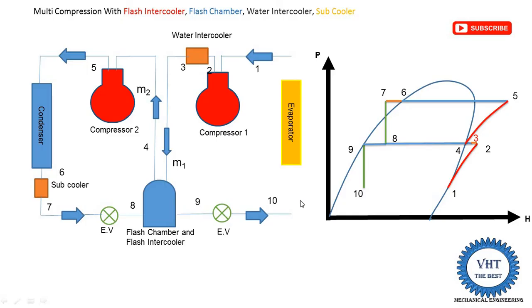The refrigerant is supplied into the evaporator to absorb heat from the space. In a freezer, for example, the refrigerant absorbs heat from vegetables, fruits, and water for making ice. The refrigerant temperature increases or its phase changes from liquid to vapor region. The process 10 to 1 takes place and the mass of refrigerant is M1. At point 10 it starts absorbing heat and is fully converted to vapor at the outlet of the evaporator. Next we do the energy balance of the flash chamber and flash intercooler and find the refrigerating effect and COP equation.